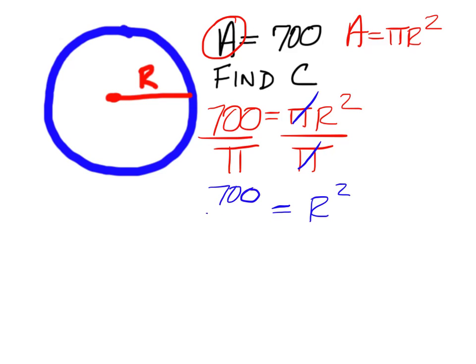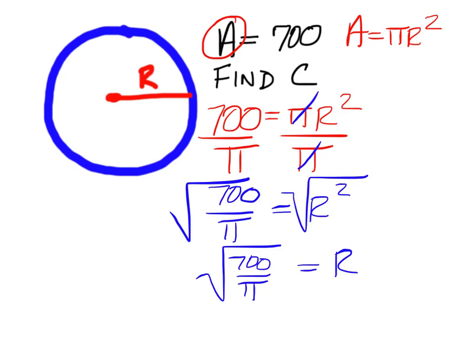And the 700 over pi, we have one more operation to do to both sides, and that is the square root, because that gets the r squared down to being r. So square root of 700 over pi is what we have for r, but don't evaluate that yet.